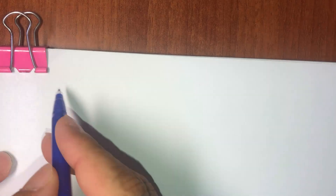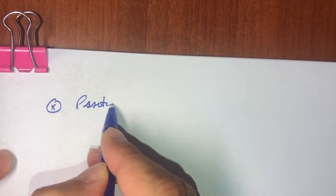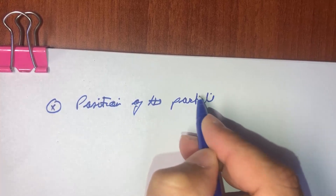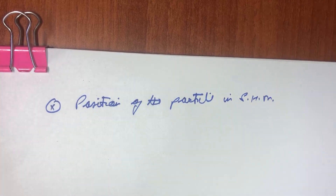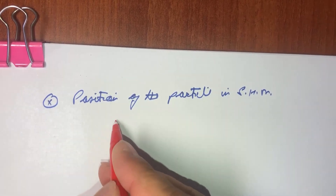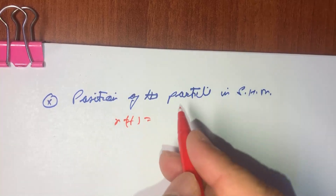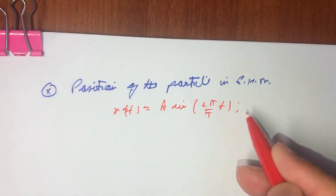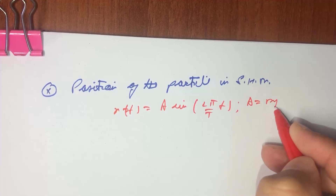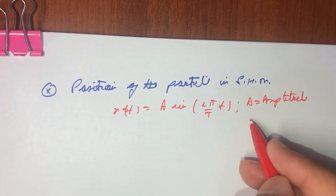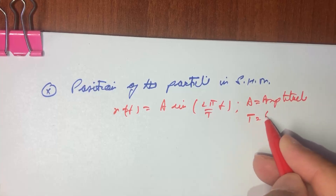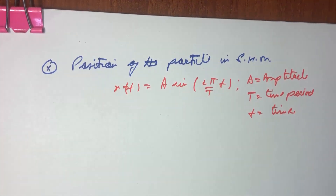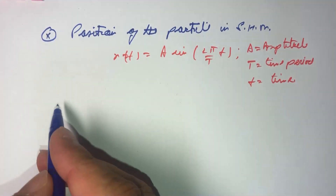The position of the particle in SHM is given by the equation x of t equals A·sine of (2π/T)·t, where A is the amplitude, capital T is the time period, and small t is the time.